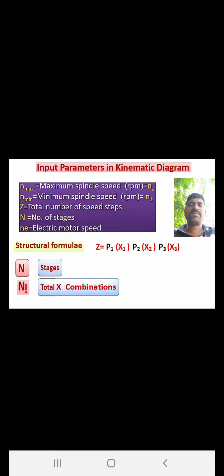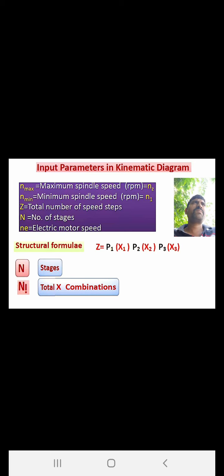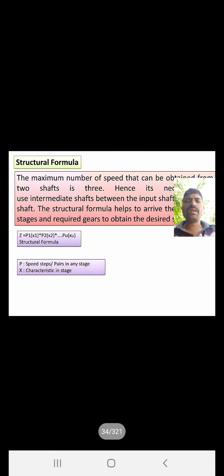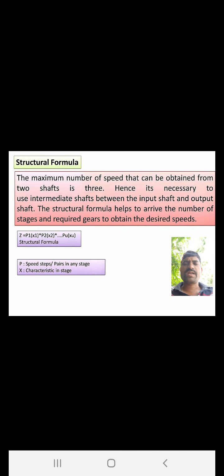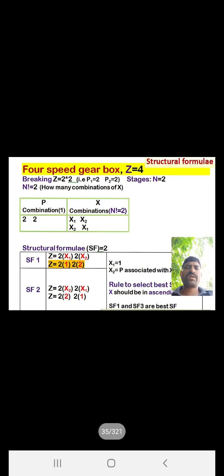We calculate the number of spindle speeds, number of stages, and use n-factorial to get different combinations for x1, x2, x3 and p1, p2, p3. The structural formula is: z = p1^(x1) × p2^(x2) × ... × pu^(xu), where p is the speed steps or pairs in each stage and x is the characteristic of that stage.